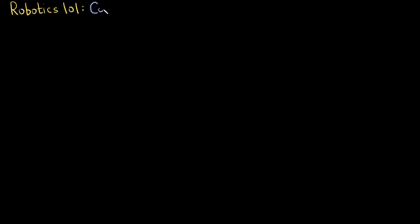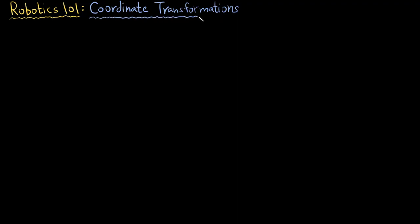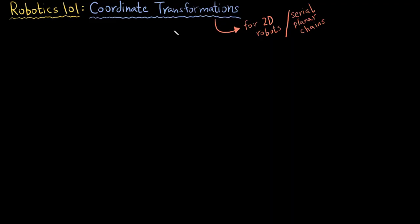Welcome to the first video in this video series on Robotics 101. In this video we are going to be talking about coordinate transformations. We are going to focus on coordinate transformations for the case of 2D robots, also known as planar serial rings, simply because they are easier to understand. After a few videos when we get a grip on it, we are going to move to the 3D case.